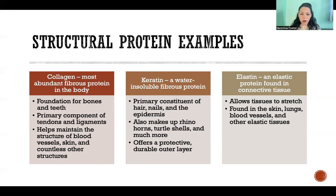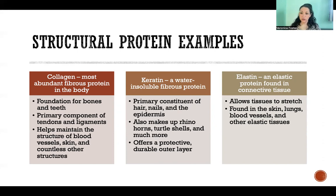Keratin is a water-insoluble fibrous protein — a fancy way of saying it's somewhat waterproof. It's a protective protein and the primary constituent of hair, nails, and the epidermis, which is the outer layer of the skin. That's part of why our skin is waterproof — keratin provides a strong, protective outer layer, and combined with certain oils produced by the epidermis, it seals the skin against water. That's why we don't blow up like balloons when we go swimming.